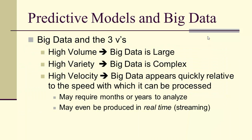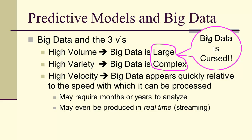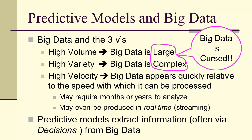Remember, we have big data in the three Vs: high volume, high variety, high velocity — large, complex, relatively fast. We have to worry always about velocity, and we have to remember that big data is cursed — that large and complex has a dark side. Predictive models extract information, often from the use of decisions, from big data.